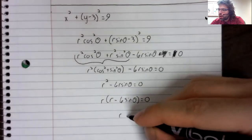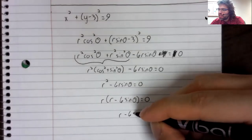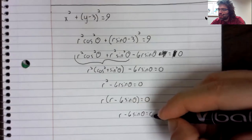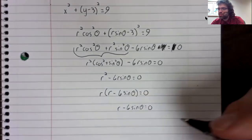Or r minus six times the sine of theta equals zero.